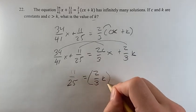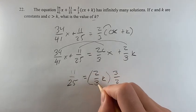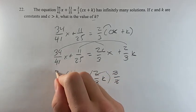So what is k? Well, if we want to isolate that, we can multiply it by three-halves. This will cancel. We have to multiply both sides by three-halves.